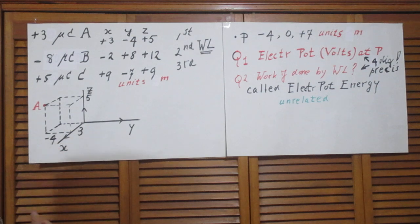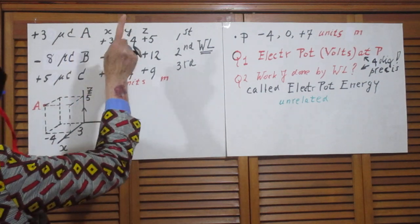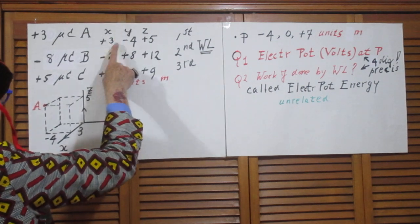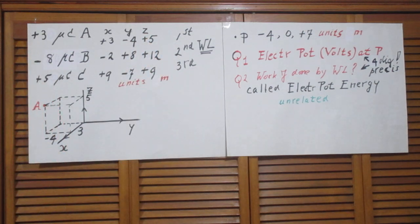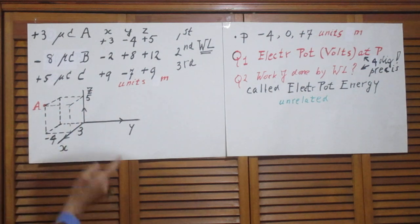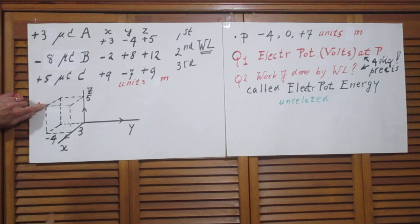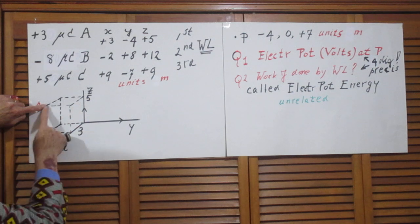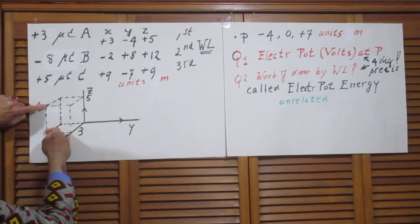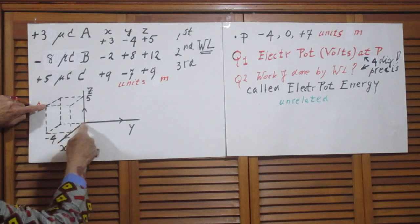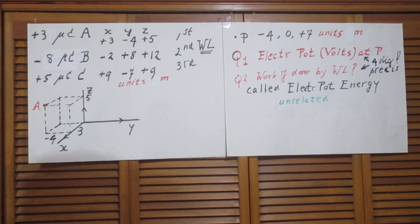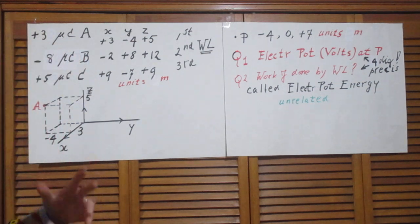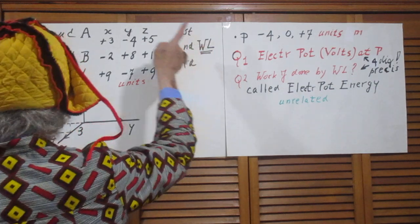It's a right-handed coordinate system. I put that charge at location A with x equals plus three, y equals minus four, and z equals plus five. So that means, if you look here, charge A is positioned such that this distance is three in the x direction and minus four in the y direction. I only show that for point A because it would be a mess to do it for all other points. So I bring that charge to point A.